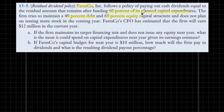The firm has estimated that it will earn 12 million dollars in net income during the current year. Given these facts, first we need to figure the most that the firm can spend on capital expenditure given its financing mix and profitability estimates. Second, if the company's capital budget for the next year is 10 million dollars, how much will the firm pay in dividends and what is the resulting dividend payout percentage?